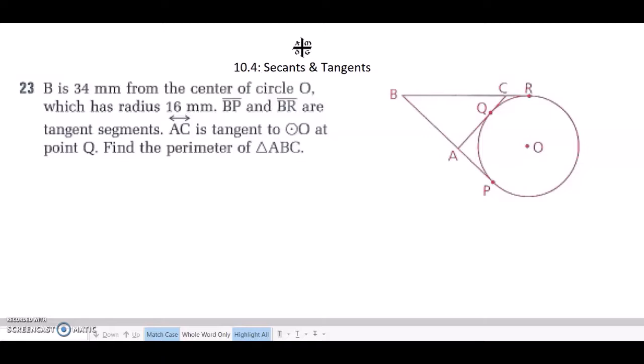In problem 23, B is 34 millimeters from the center, so I'm going to draw that in and label it. And the circle has a radius of 16.